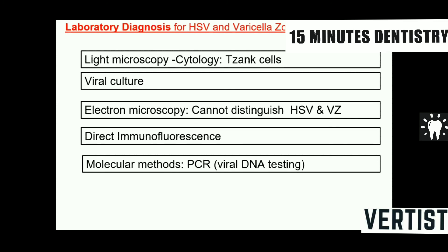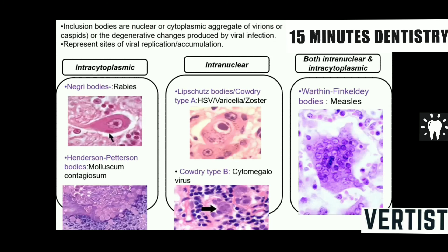Inclusion bodies are nuclear or cytoplasmic aggregates of virions, collections of viral antigens, or degenerative changes produced by viral infection, representing sites of viral replication or accumulation. They may be intracytoplasmic or intranuclear. In herpes simplex and varicella zoster, what are seen are intranuclear Lipschütz bodies.